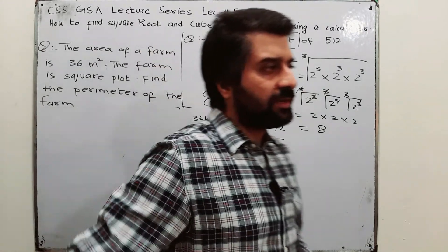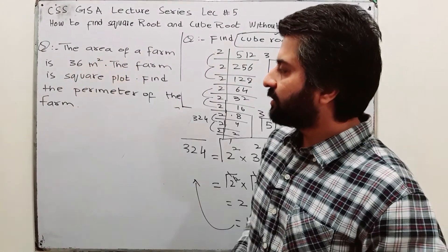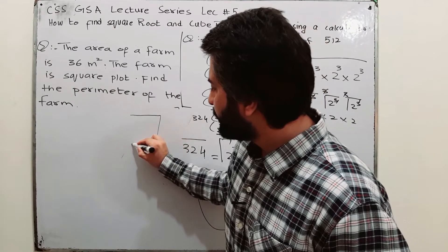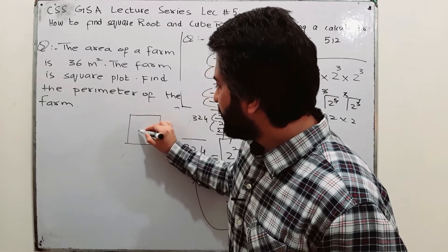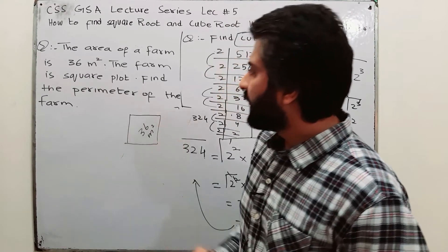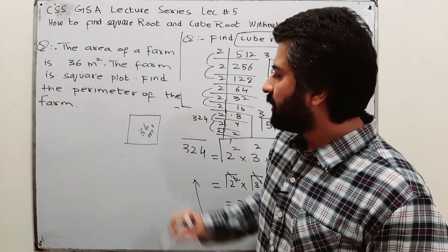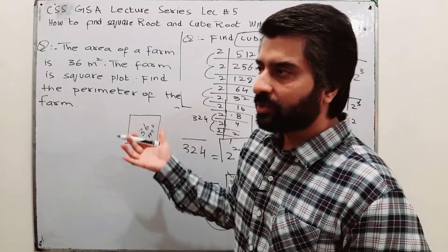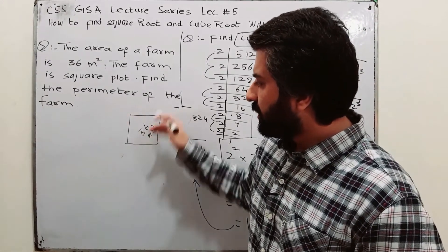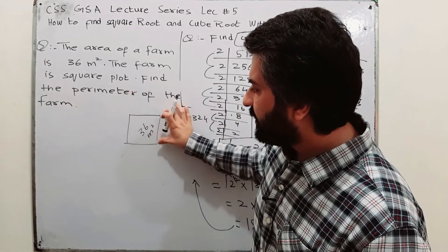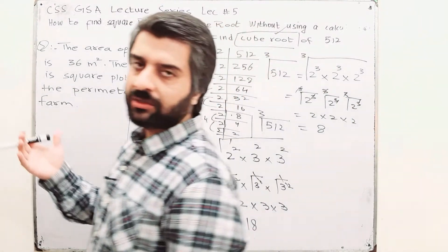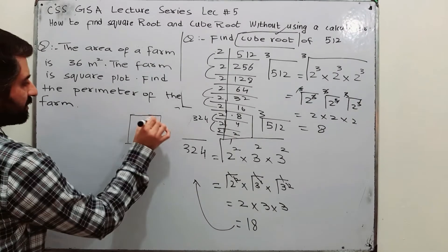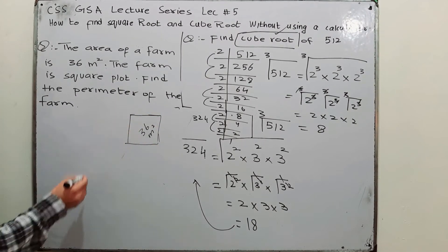Here is how we apply the concept of square root. Take this example: we have a square farm and the area of that square farm is 36 meter square. We have to find the perimeter of the farm — perimeter means boundary. First, we must find the length of one side of the square. Since it is a square, all sides are the same. If we find one side, we can find the rest.